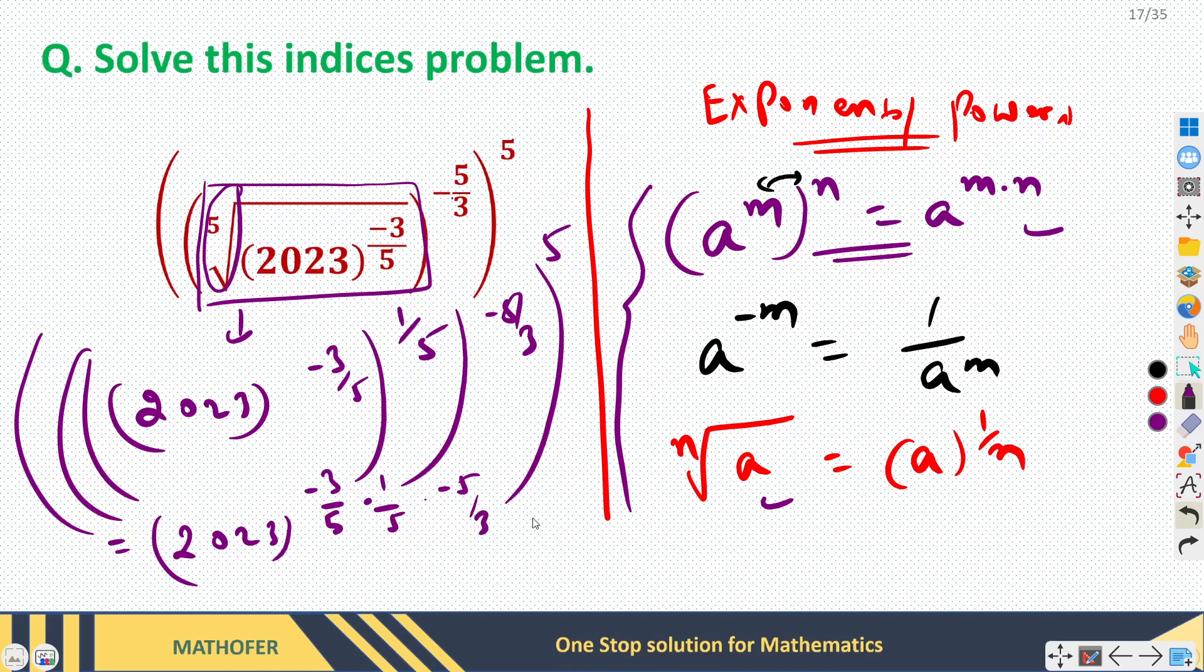Now let's see if we can cancel out something. So 5 is gone, this 5 is gone, this 3 is gone. So from here 2023 raised power minus 1 into minus 1 into minus 1, that is 1. So from here we get 2023.